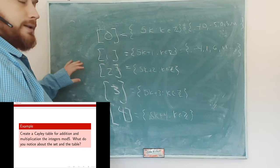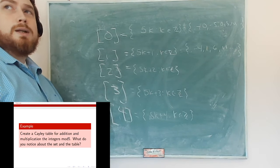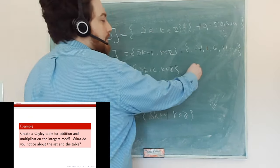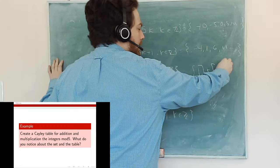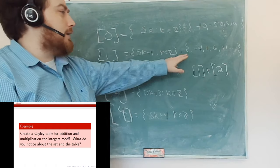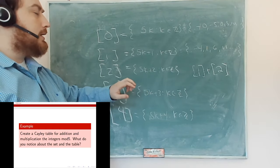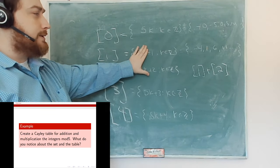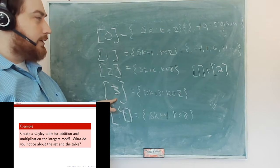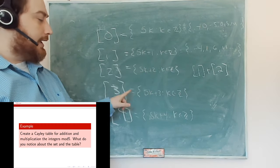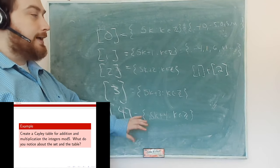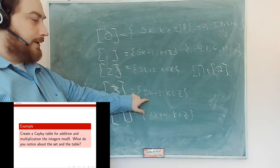Now I want to look at what happens if we try to define addition between sets — not the union, but actual addition. Consider the equivalence class of 1 plus the equivalence class of 2. If I take any element in the class of 1, say 1, and add any element in the class of 2, say 2, I get 3, which is in the class of 3. Another example: 6 plus 2 is 8, and 8 = 5+3, so we end up in the class of 3 again.